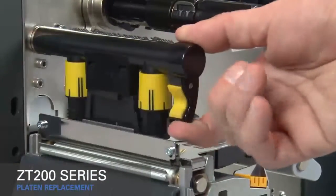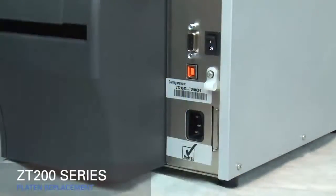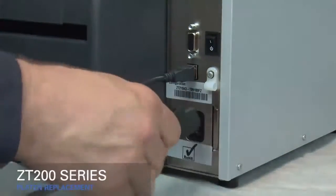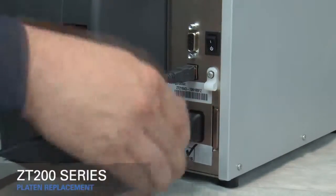Rotate the gold printhead lever down to close the printhead. Reconnect the power cord and data cables. Turn on the printer.